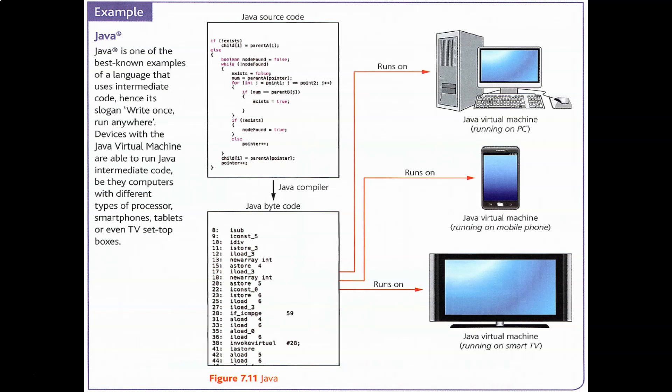Instead, you compile Java source code into an intermediate stage, and then the Java Virtual Machine runs that on PCs, mobile phones, smart TVs, and all kinds of other devices. This means Java code is kind of 'write once, run anywhere.' When Java came out in the 1990s, that was its big selling point — it was incredibly portable. Subsequently, a lot of other languages followed the same sort of development model.